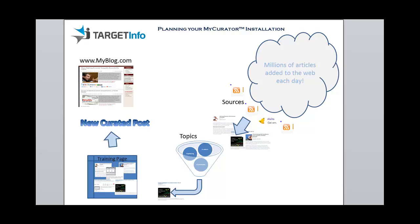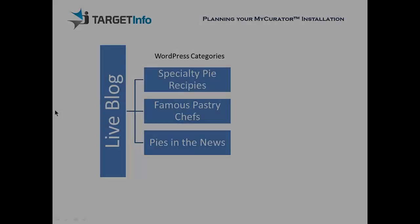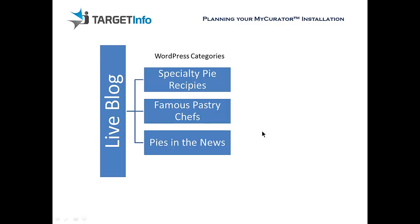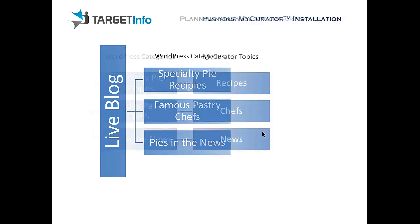To make all this happen takes a little planning and setup. The first step is to decide which categories on your blog are going to hold the content curated from MyCurator. In our example, we are blogging about pies. You can create these categories now, or they may already be there. It's up to you and your theme whether these show up as menu items or just within your normal blog page.